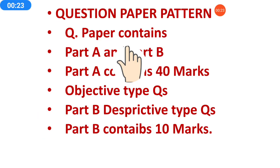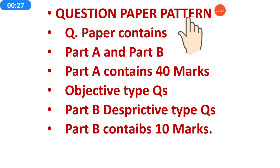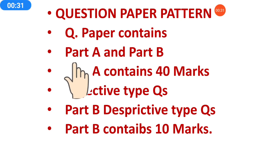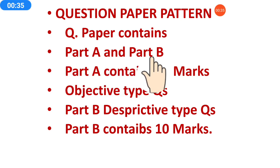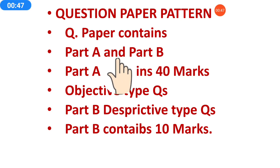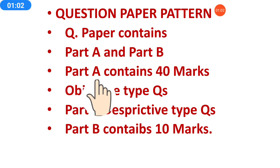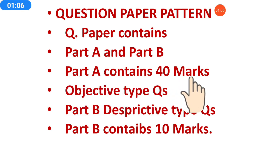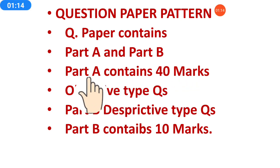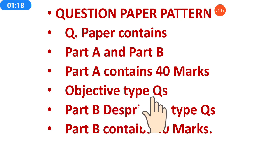First I explain you how your question paper pattern will be. In the question paper pattern, the paper contains Part A and Part B. In PT-1 exam, only one part was there with all 20 MCQs. But in the half yearly exam paper, this paper is divided into two parts: Part A and Part B. Part A contains 40 marks. Your half yearly exam is of 50 marks. Out of 50 marks, 40 marks will be of Part A, and in Part A, objective type questions will be there.